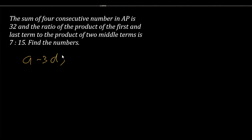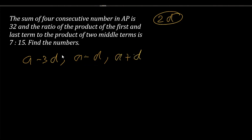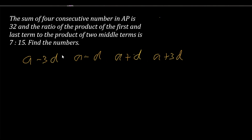I'm going to take the first term as a minus 3d, with common difference 2d. So adding 2d each time gives: a-3d, a-d, a+d, and a+3d. These are the four terms of the AP we are going to work with.